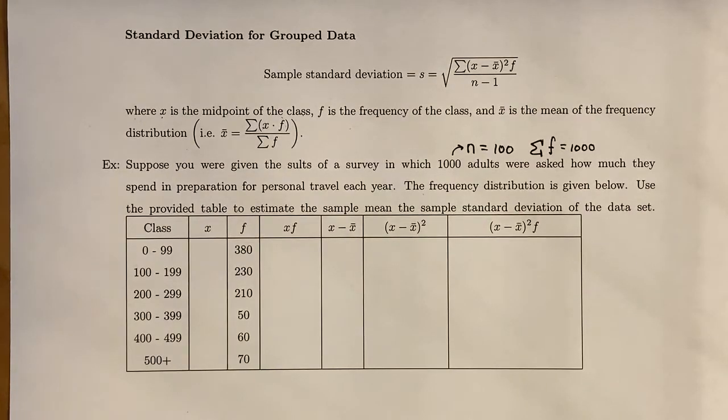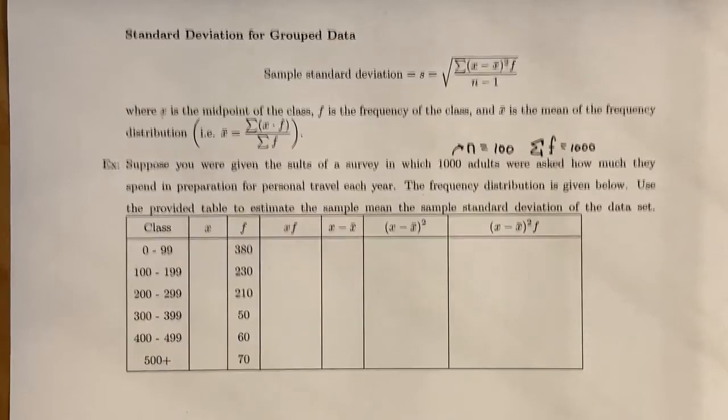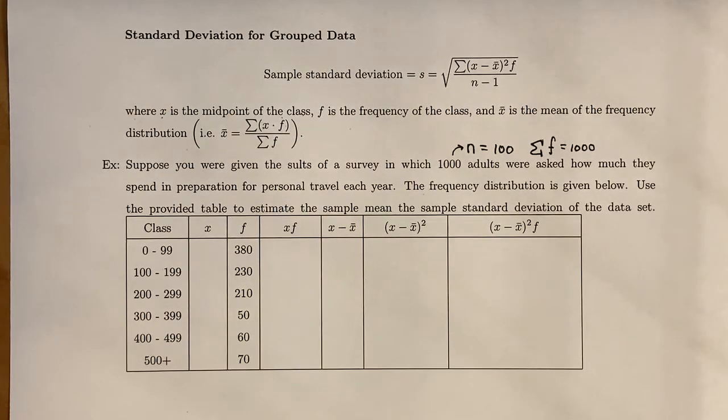The frequency distribution is given below. We want to use the table to estimate the sample mean and the sample standard deviation of the data set. We're given these classes of 0 to 99, 100 to 199, 200 to 299, and so on.